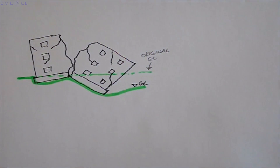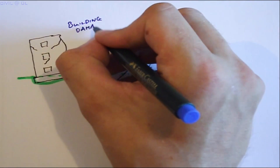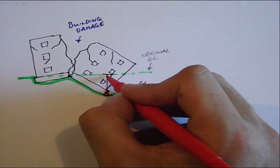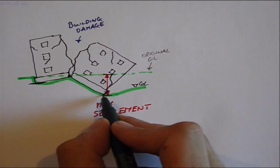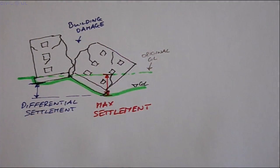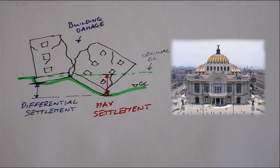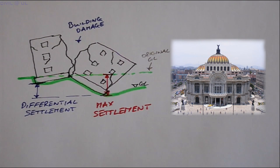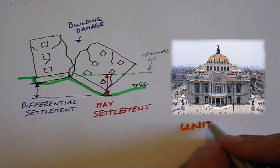Compare the damage of the following building, which has experienced a differential settlement, with that of the Palace of Fine Arts in Mexico City, which experienced a total settlement of 4.6 metres, but escaped any serious structural damage because the settlement was uniform.